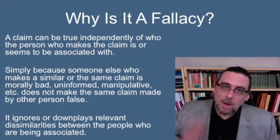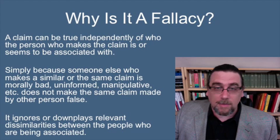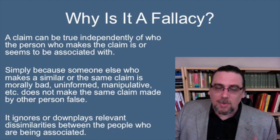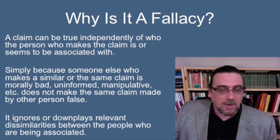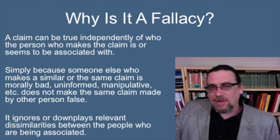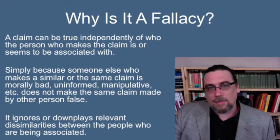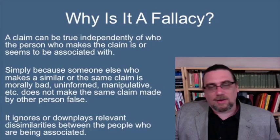Why is this a fallacy? We always need to remind ourselves that claims are true or false independently of the person making the claim, or in this case, who that person is associated with. Just because someone else who makes the same claim is morally bad or uninformed doesn't make that claim false when made by someone else. It takes more than that to make a claim false, and it ignores or downplays relevant dissimilarities between the people being associated.